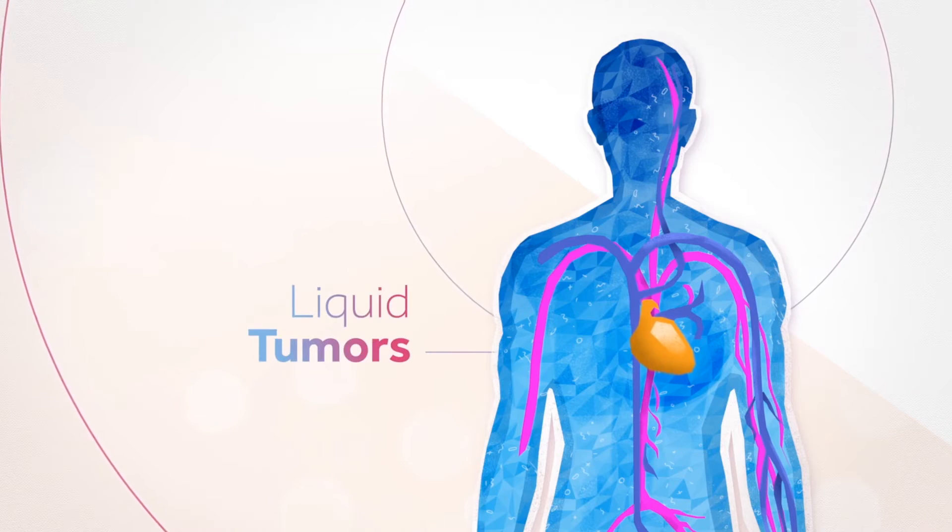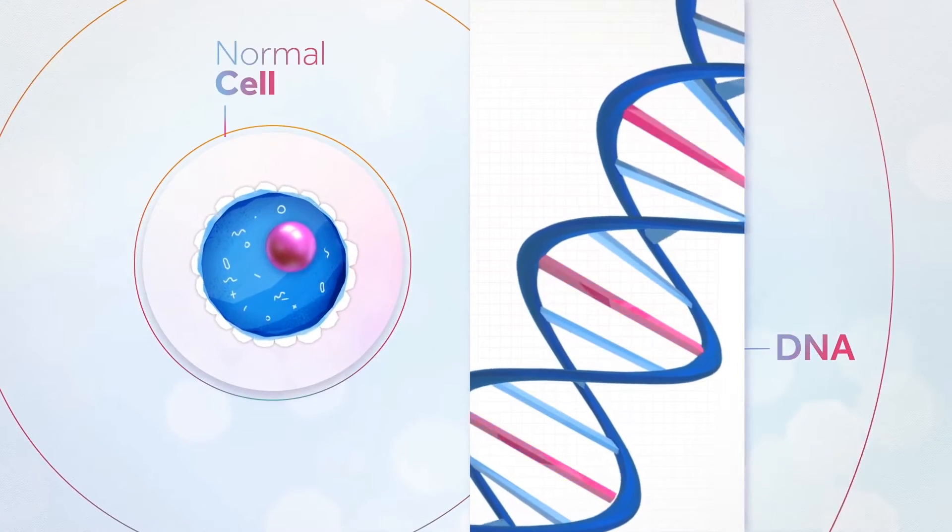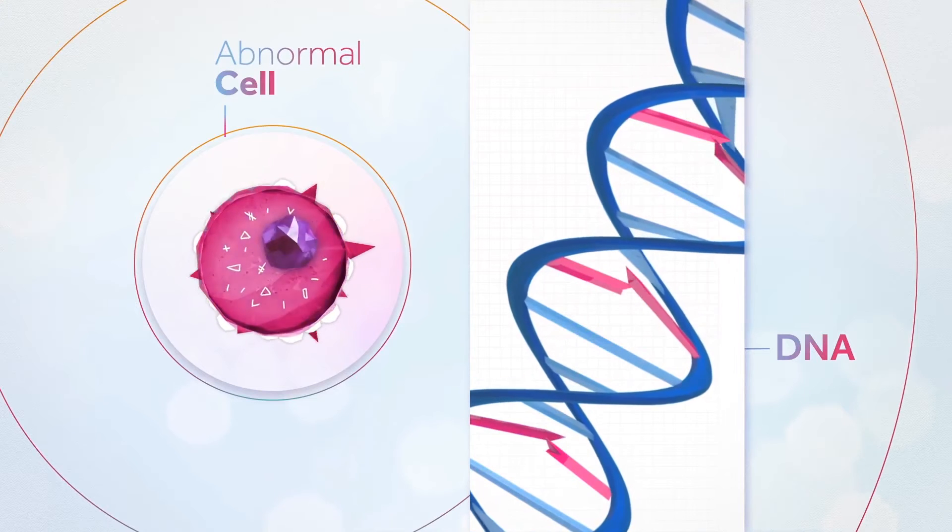Cancer can arise from every cell of the body. At the earliest stage, there is often a lesion at the DNA level of a normal cell that we call a mutation.